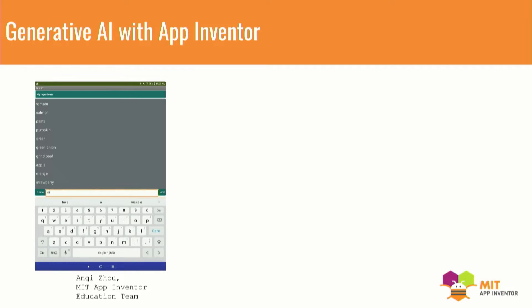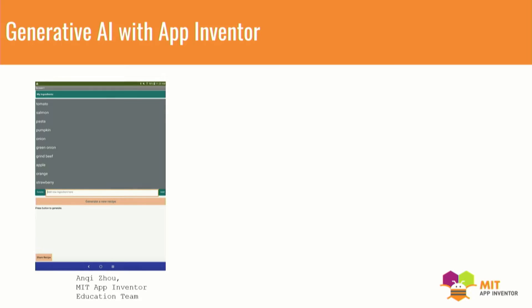For example, this app is where you can make a list of all the food ingredients in your refrigerator, and then you ask ChatGPT what should I cook for dinner. And then ChatGPT will say, based on this list, you should try making this.